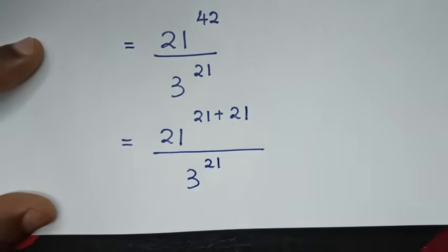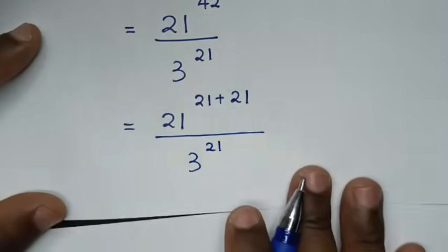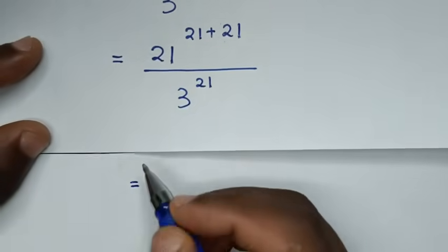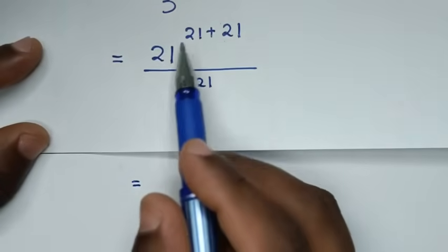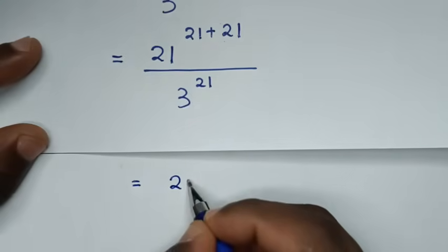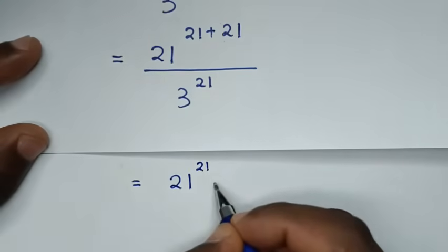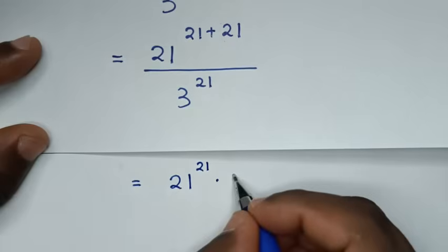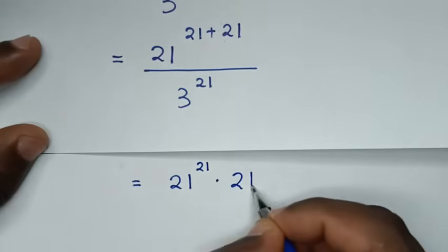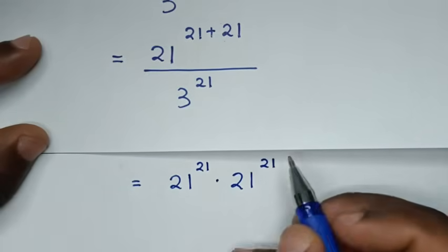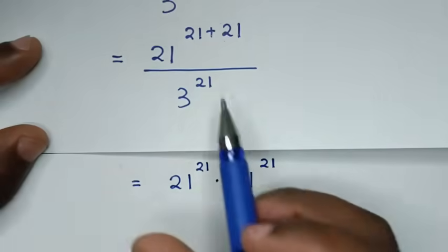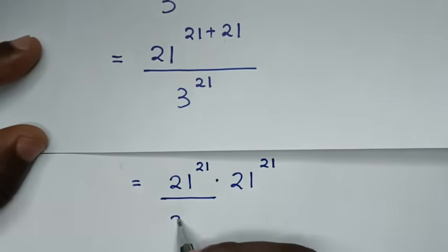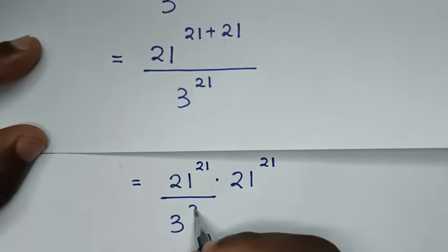Then in the next step, it will be equal to 21 power of 21 times 21 power of 21, then over 3 power of 21 — we'll divide one part by 3 power of 21.